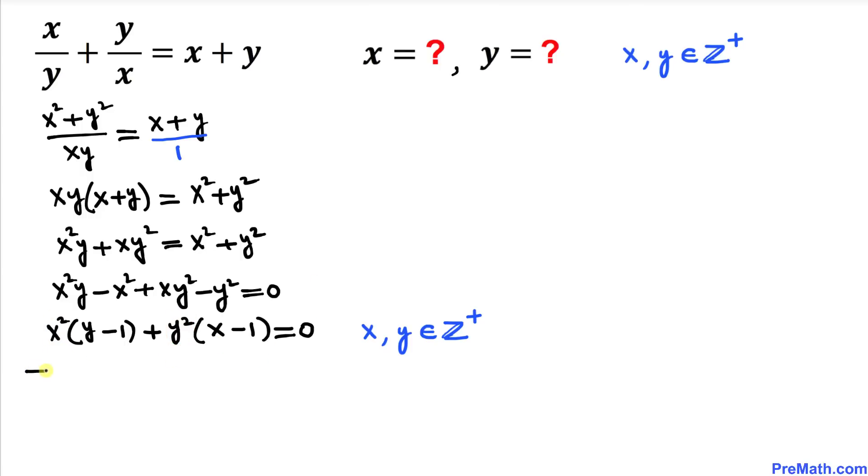So therefore, we conclude that y minus 1 equals 0 and x minus 1 equals 0 as well. Therefore, our y value turns out to be 1, and likewise, our x value is going to be 1.